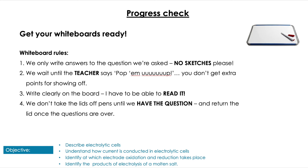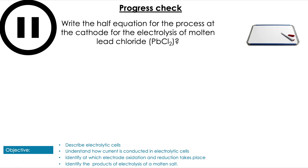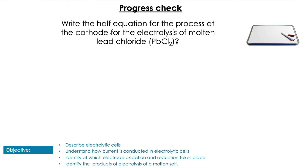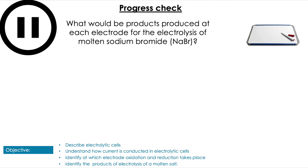Practice question: write the half equation for the process at the cathode in the electrolysis of molten lead chloride. Pause the video here. At the cathode we produce metal from cations. The cation here is Pb²⁺, so the half equation is: Pb²⁺ + 2e⁻ → Pb(s). Next question: what would be the products of the electrolysis of molten NaBr at the electrodes? Pause the video here.